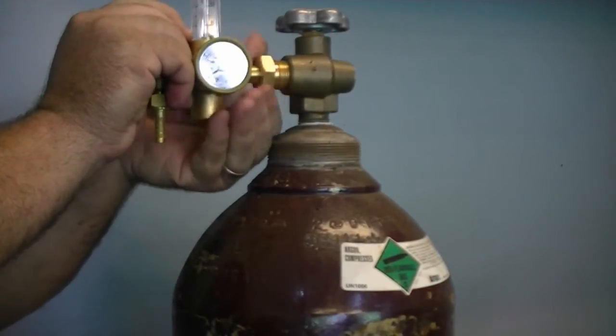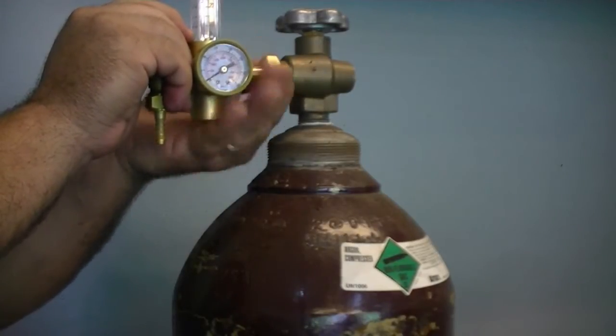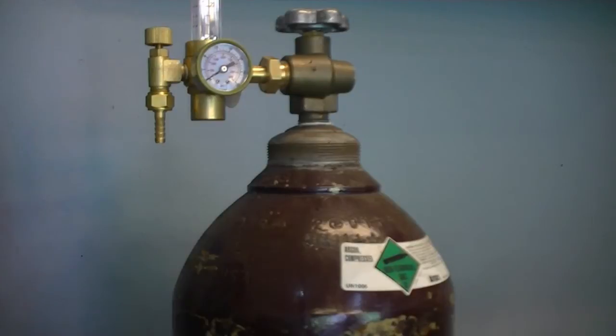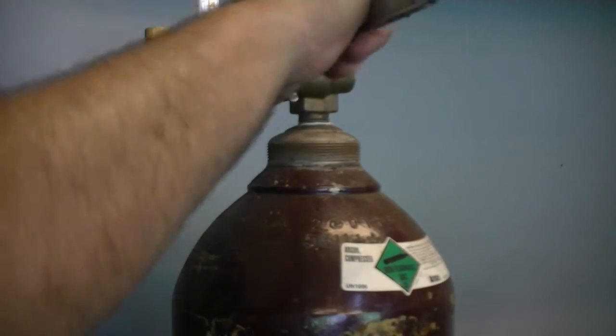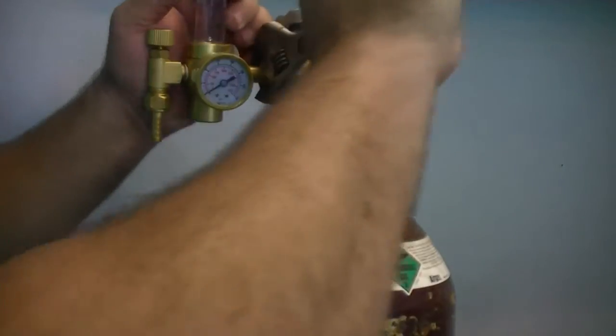Snug the fitting in by hand at first. Then carefully hold the regulator with one hand while tightening with another. If the regulator tilts over too far, loosen the nut and twist the regulator back into position and retighten the fitting.